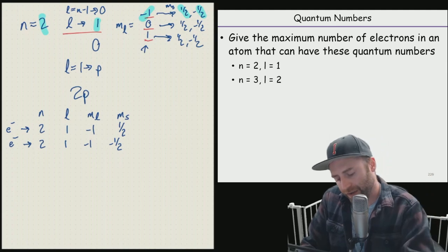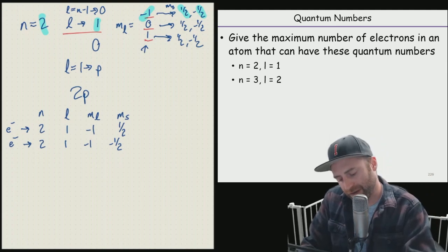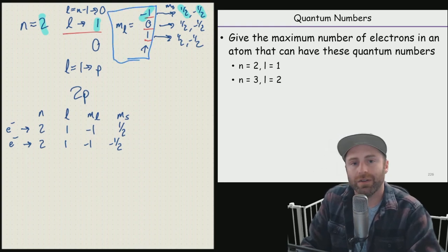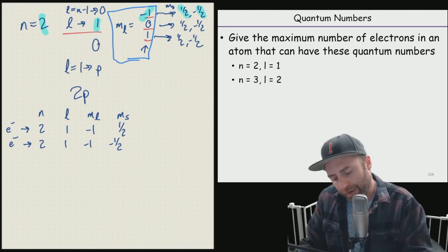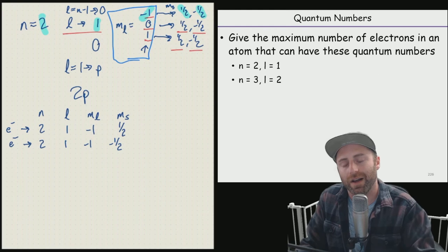But didn't we say with this section right here, M sub L could equal zero, one, or negative one? Yeah, we did. So we need to come over here and take into consideration the other four possibilities.